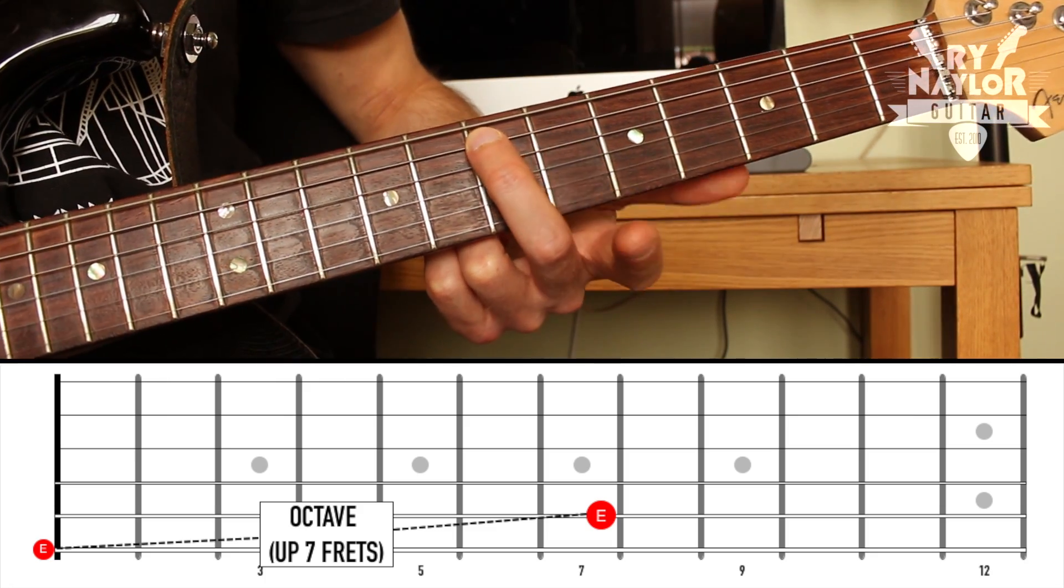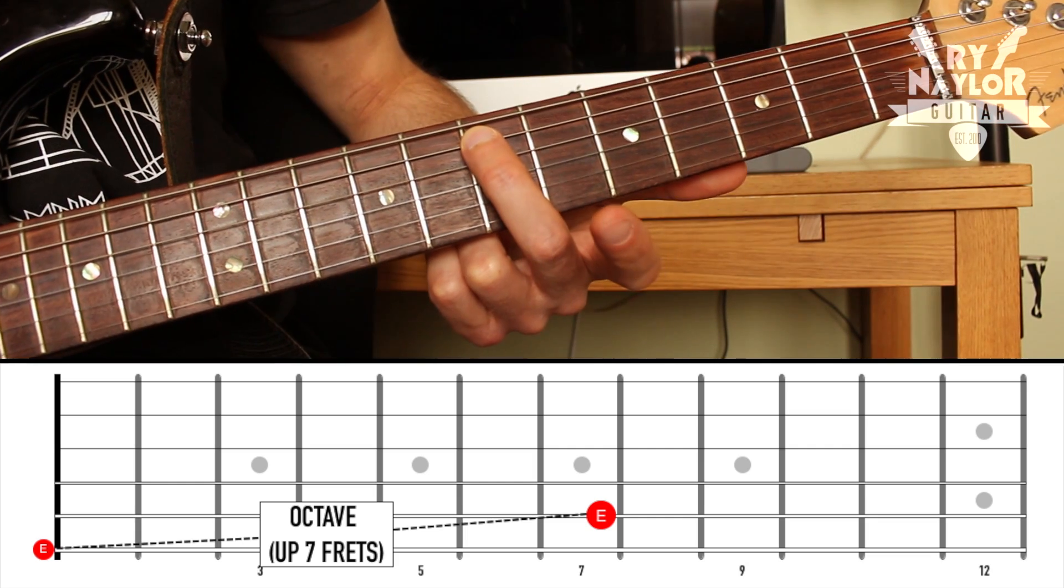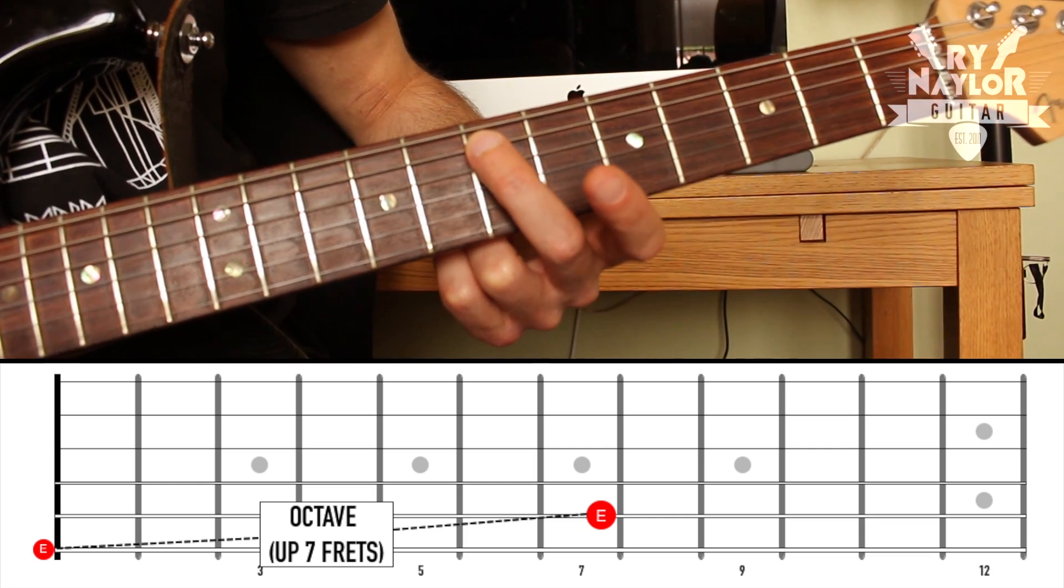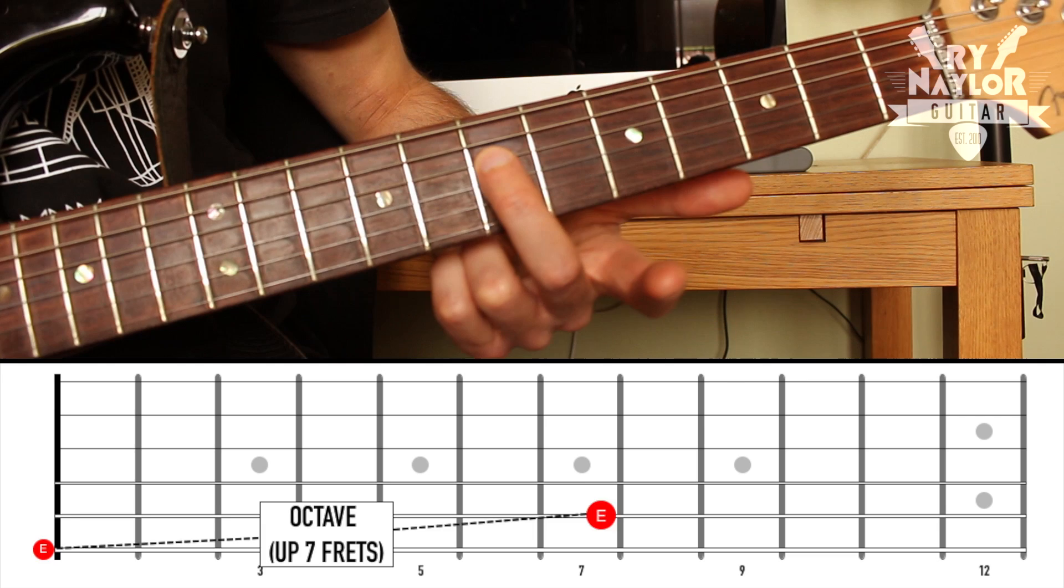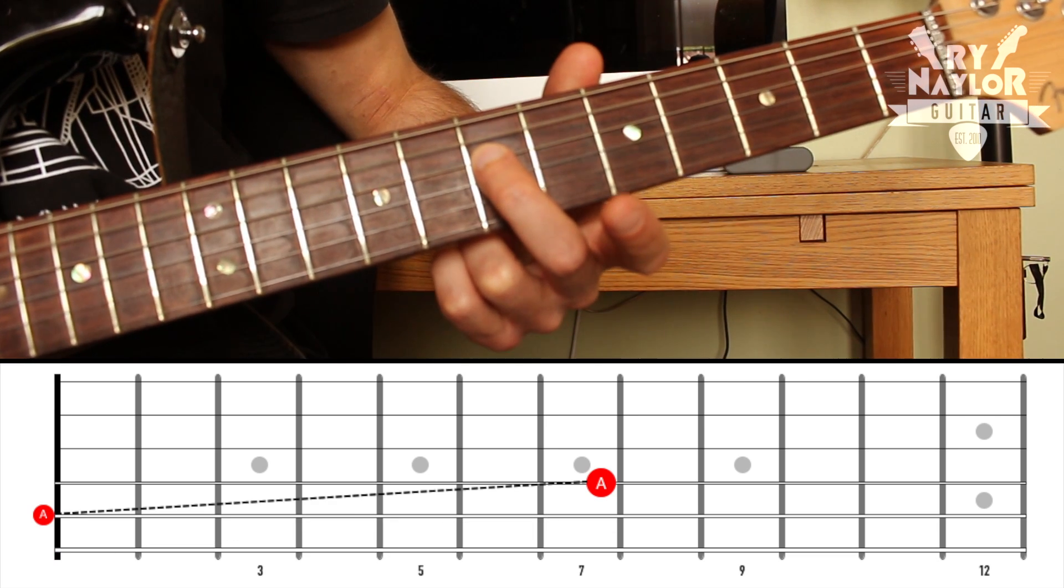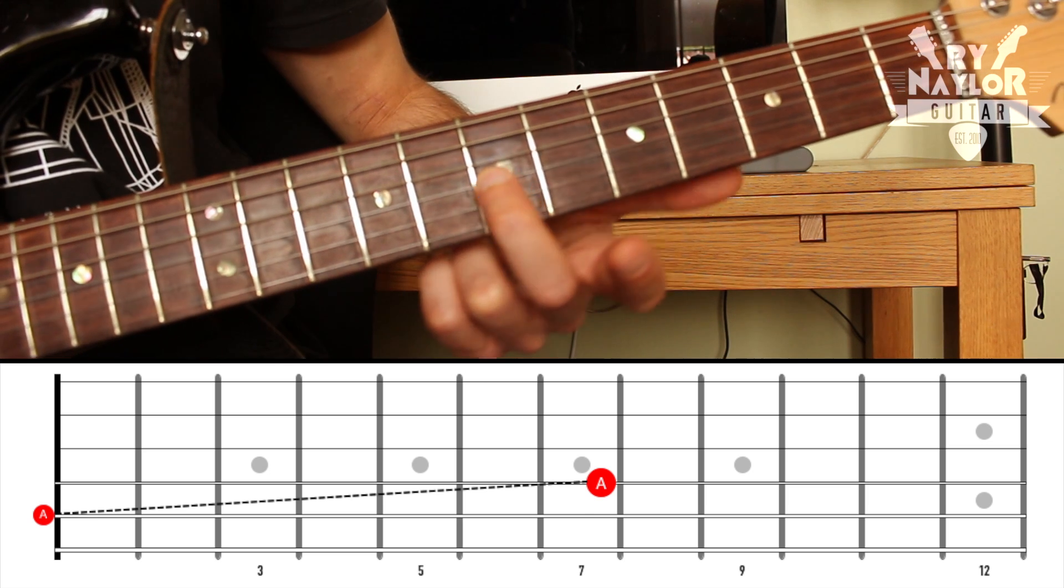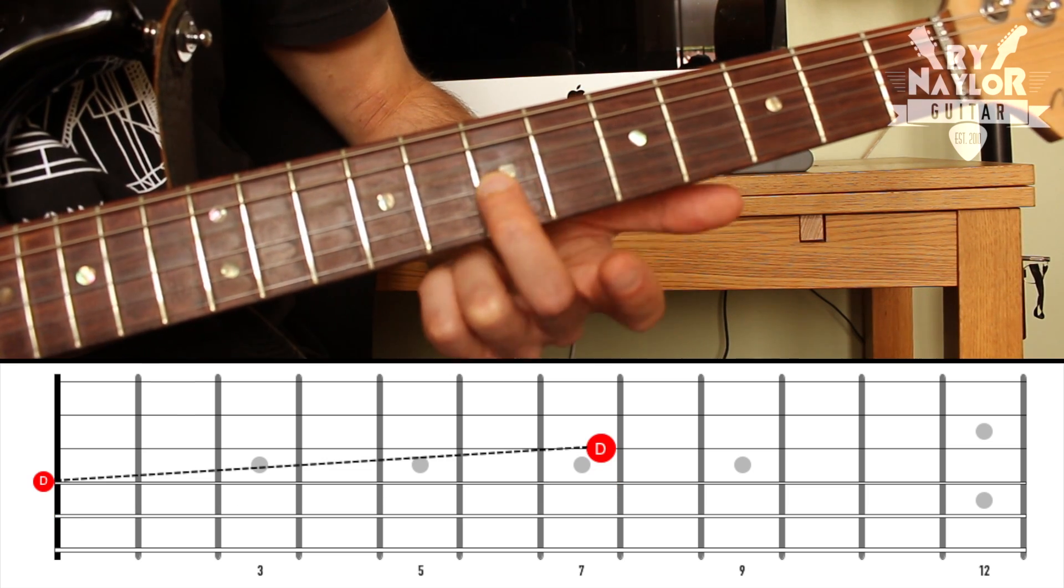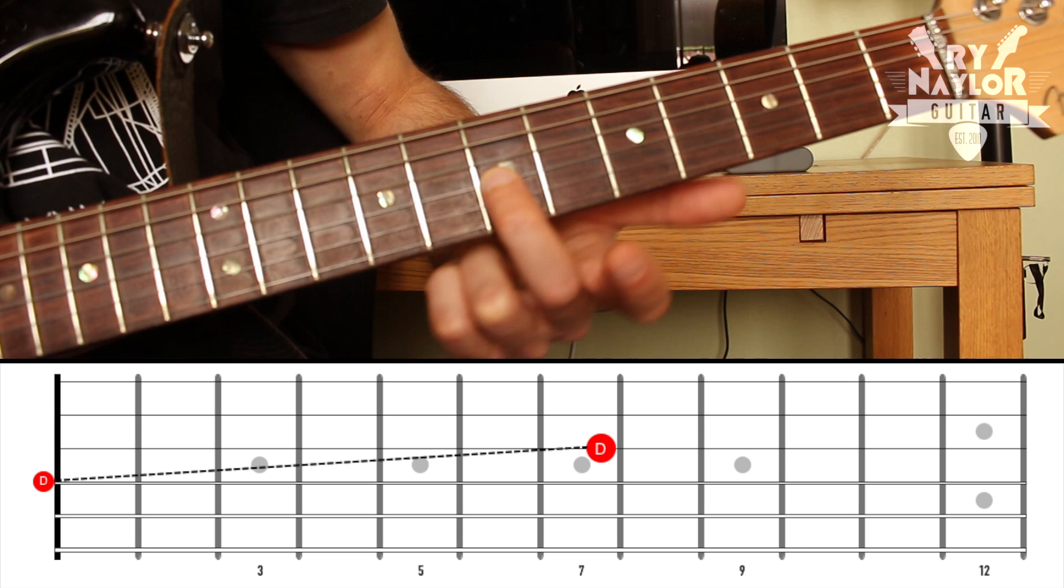Now let's think how that might change as we move the shape down towards the floor. So from the A string, the octave is still at fret number seven. As I move to the D string, the octave of that is also on fret seven on the G string, string three.